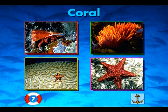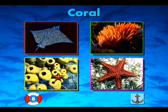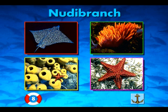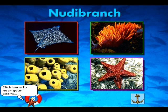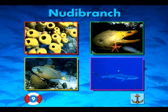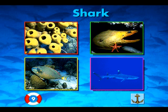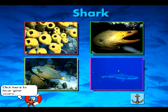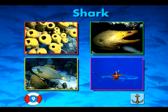You're doing great! I'm a nudibranch. Can you find me? This is your score so far. Eight. You're right! I'm a nudibranch. I'm a shark. Can you find me? This is your score so far. Nine. You're right! I'm a shark.